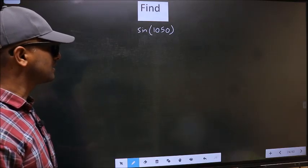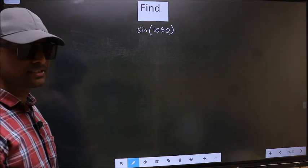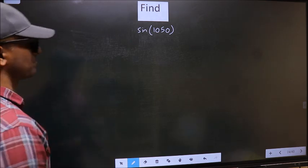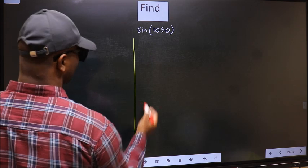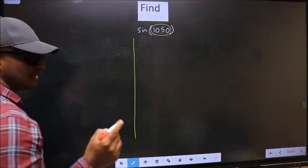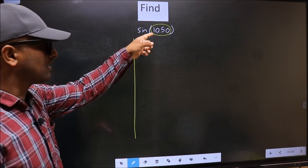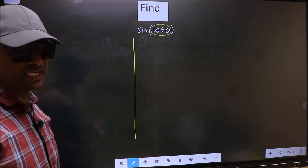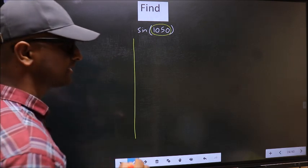Find sin(1050°). To find this, we should follow this method. Here we have 1050. Now you should check: 1050 lies between which two multiples of 180?